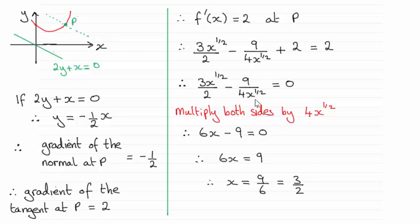And when it comes to this term, the 4x to the half will get cancelled just leaving you with 9. So you get 6x minus 9 equals 0. Rearrange it and you end up with x equaling 3 over 2.